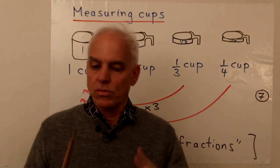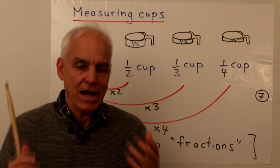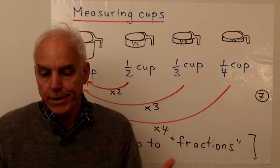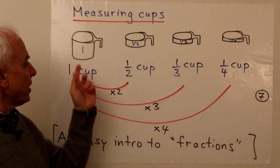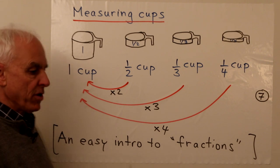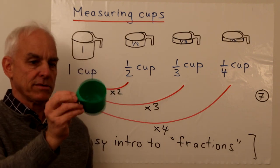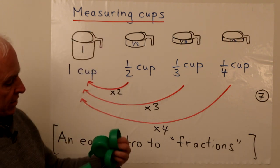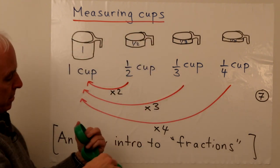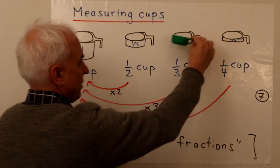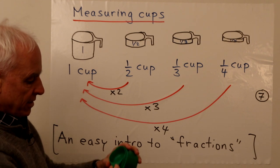Especially useful for young children who want to help in the kitchen is understanding measuring cups — they help us measure volumes and capacities of fluids, grain, sand, or anything that pours. Here is a standard system of cups: a one-cup unit, a half-cup, a third-of-a-cup, and a quarter-of-a-cup. These have little indicators on them for reading measurements.